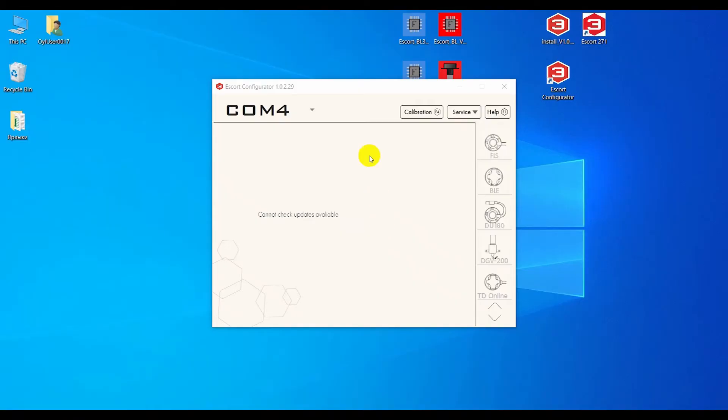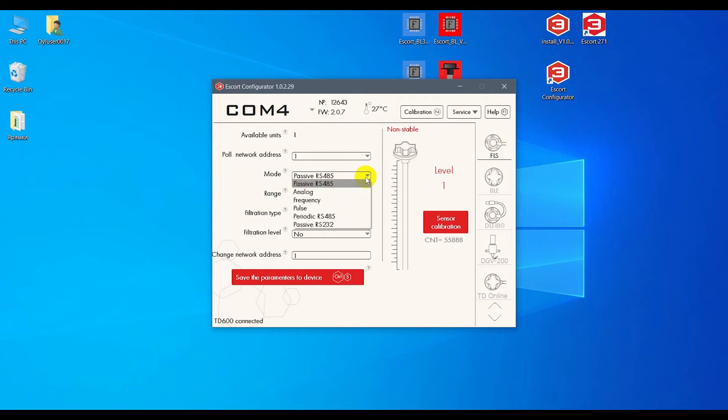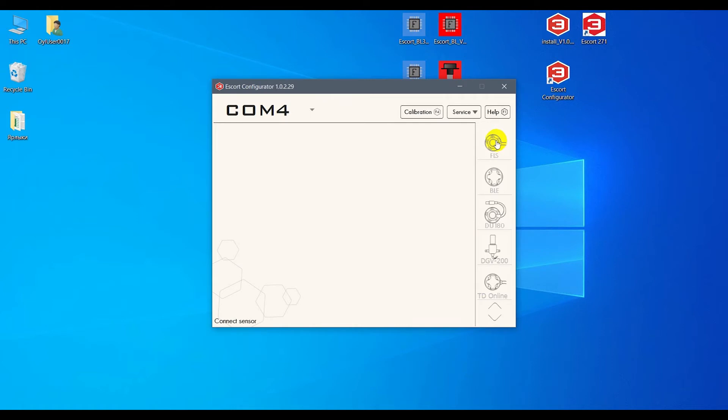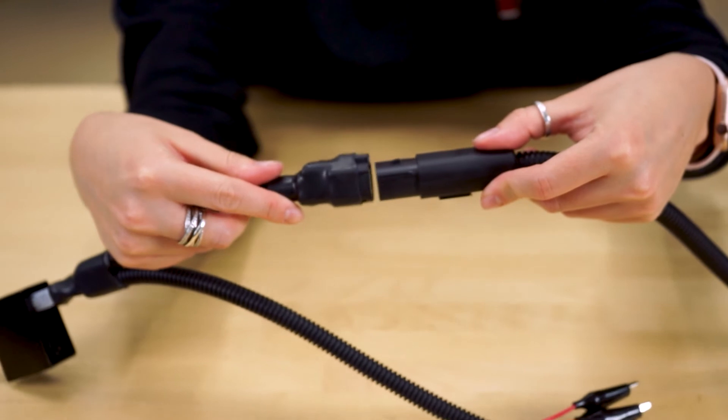All right, let's assume the sensor has enough power but still does not appear in the configurator. This could be due to the 15 seconds rule. If the sensor's operating mode is changed, for example you set a TD600 to the analog mode, the next time you connect it to your laptop you will have only 15 seconds to press the FLS button in the configurator program. If those 15 seconds pass before you click the FLS button, the sensor will not connect. If this happens, you need to reconnect the sensor and press the FLS button within the set 15 seconds.